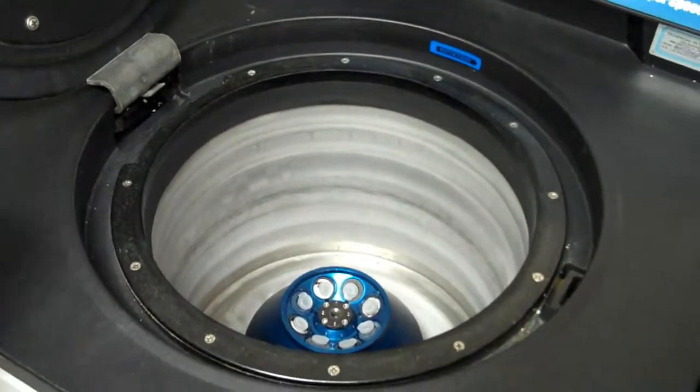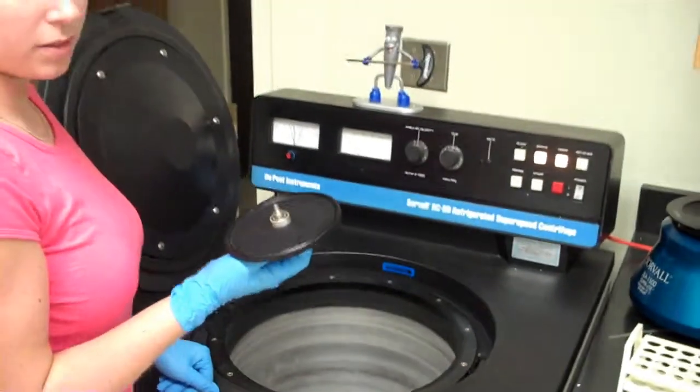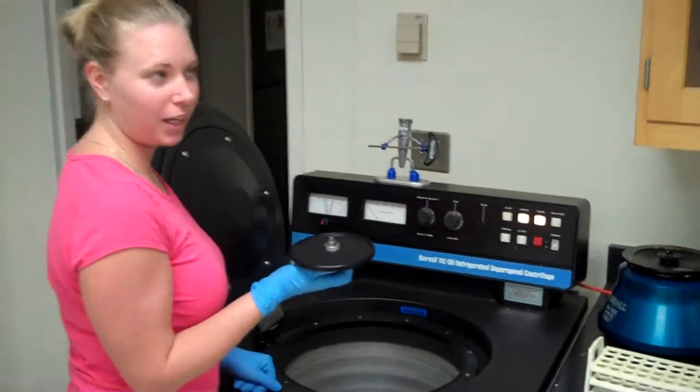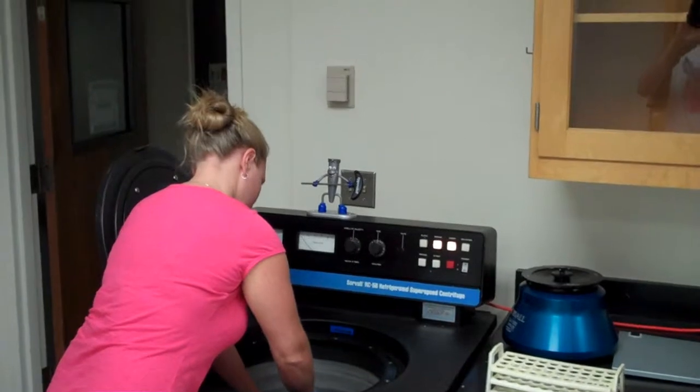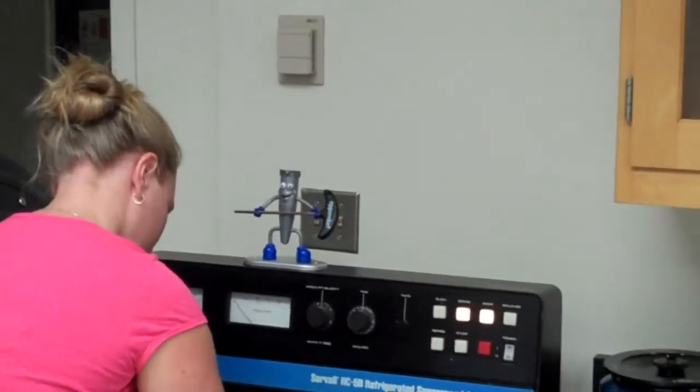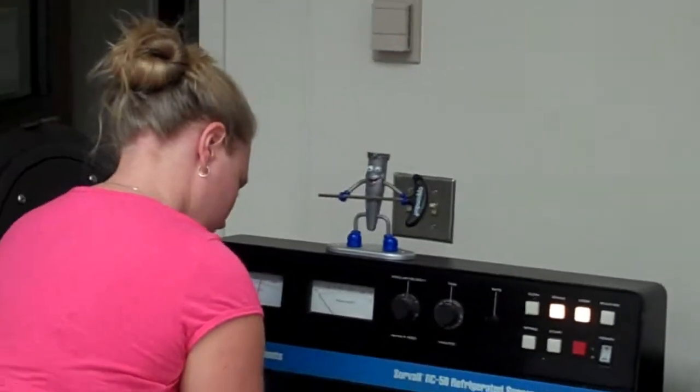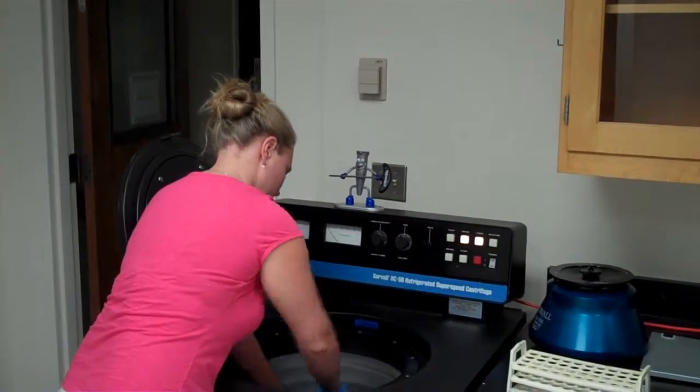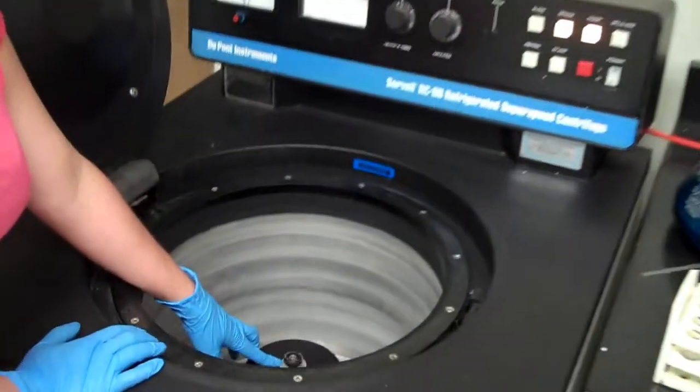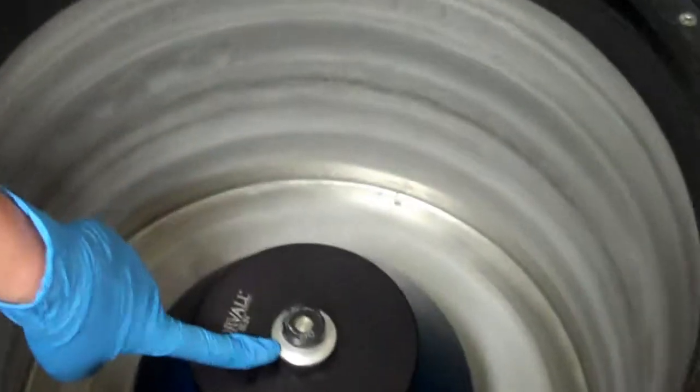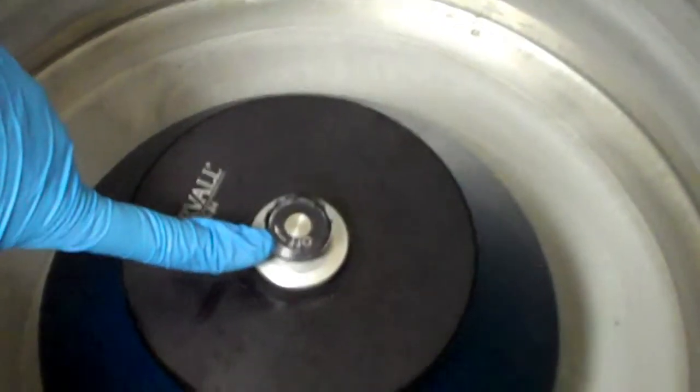Once your centrifuge is loaded properly, always make sure to latch the lid tightly. This centrifuge has two dials. You need to make sure that the silver dial is turned tightly as well as the black dial on top.